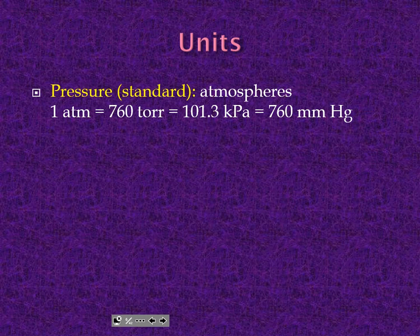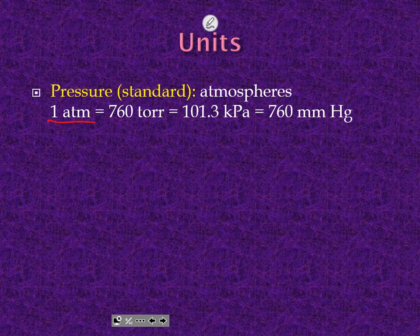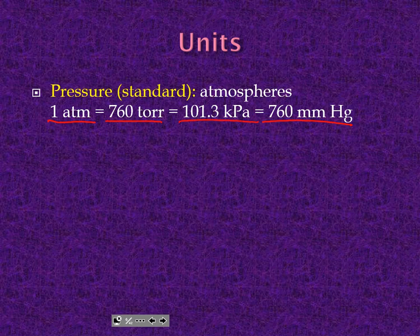Units — you definitely have to know your units. This is probably the toughest part of gas laws. Standard pressure is one atmosphere — atmospheric pressure at sea level. One atmosphere equals 760 torr or 760 millimeters of mercury. Those are the same measurement. The last one is 101.3 kPa (kilopascals). All of these equate to standard atmospheric pressure at sea level, and they use all different versions in gas law problems. You can convert between them with these values because they're equal to one another.